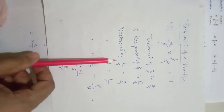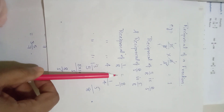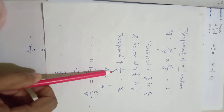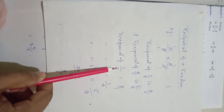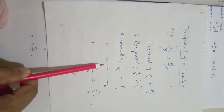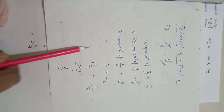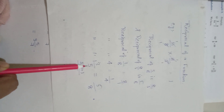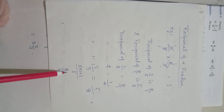Likewise, we can find the reciprocal of other examples. For 1 by 8, its reciprocal is 8 by 1 — you only need to switch numerator and denominator; numerator will become denominator and denominator will become numerator. Another example: reciprocal of 4 — since there is nothing it means there is 1, so reciprocal is 1 by 4. Another example: reciprocal of 1 and 3 by 5 — first we have to convert it into an improper fraction, it will be 8 by 5, so its reciprocal is 5 by 8.